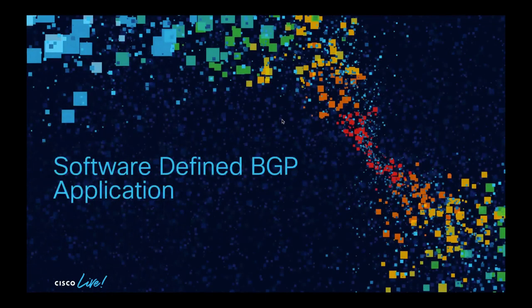Software Defined BGP app is designed to monitor the health of BGP peering and health of the process itself. Based on the health of the BGP process and its peering on a device, overall health of BGP will be displayed in green, yellow, or red. Green represents 100% BGP health, yellow represents overall health between 70 to 100%, and red indicates overall health is less than 70%.